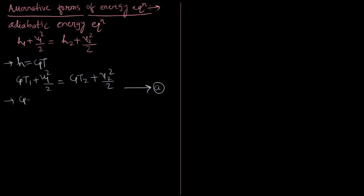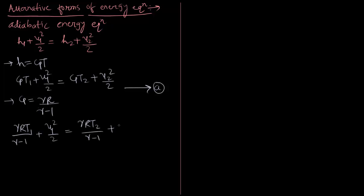Now let us substitute cp equal to γR/(γ−1). Our equation becomes γRT1/(γ−1) plus u1²/2 equals γRT2/(γ−1) plus u2²/2.